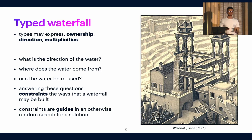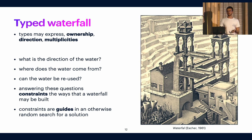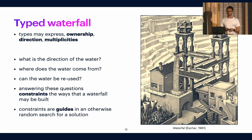Now we can think about what a typed waterfall would be. Since types express these properties, we should start asking questions like: what is the direction of the water, where does the water come from, or can the water be reused? The big idea is that thinking about types as a way to apply constraints into building software in an automated way is the main point. These constraints can then guide the software to find solutions that might be helpful for us.